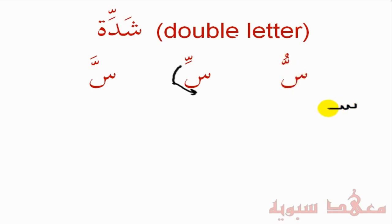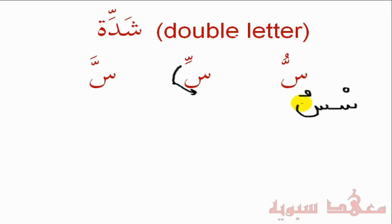There's one Seen followed by another Seen. The first Seen will always have a Sukun, and then the second Seen will have the actual Harakah. Now let's put a letter before it, because we know that a word cannot start with a Sukun — you can't have a letter with a Sukun starting off a word. So let's put the Ra, for example.